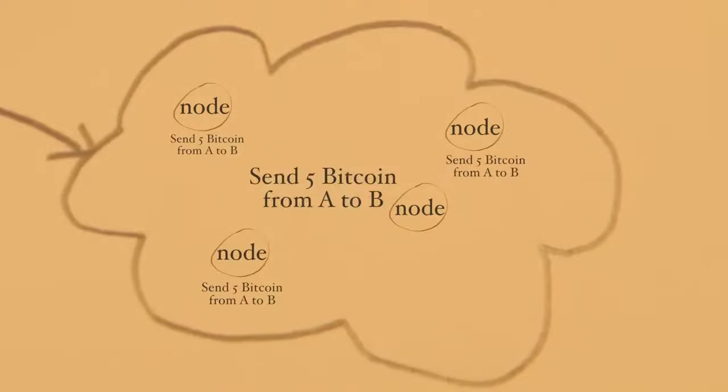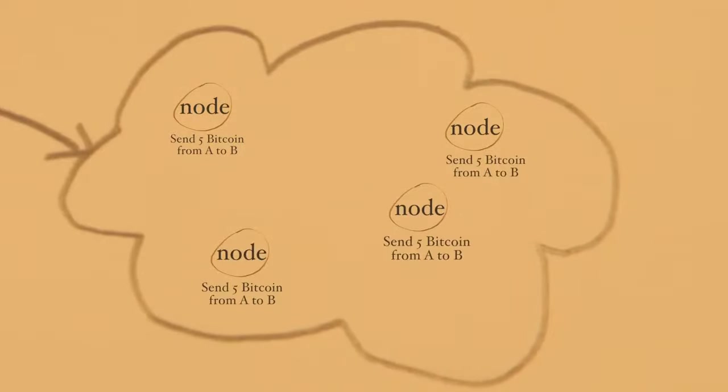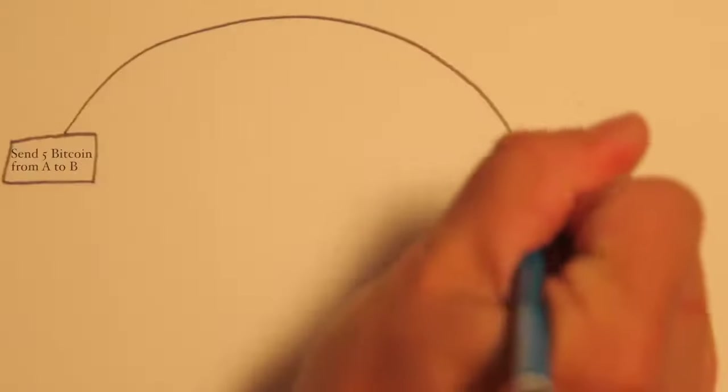First, every transaction should be heard by every Bitcoin node in the network. And secondly, every Bitcoin node must have a chance to vote on whether a transaction was valid or not. To make both things happen, Satoshi did something very clever, known as proof of work.